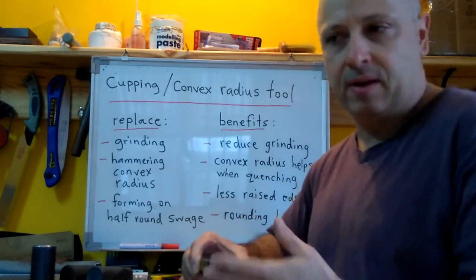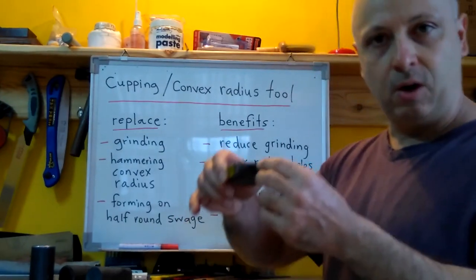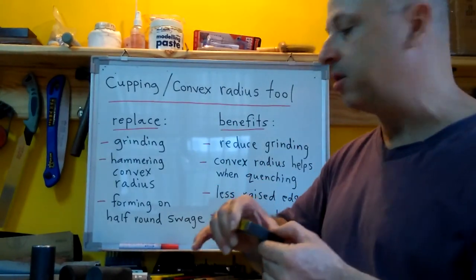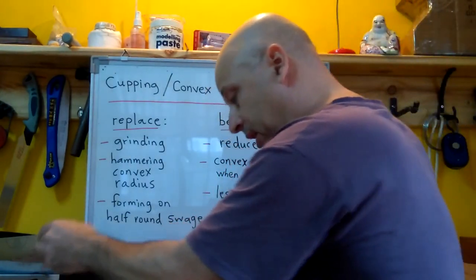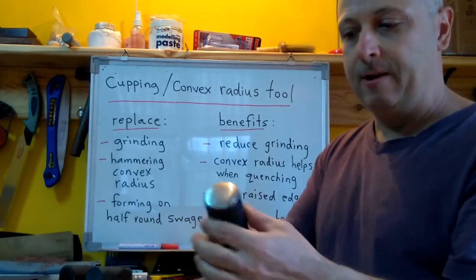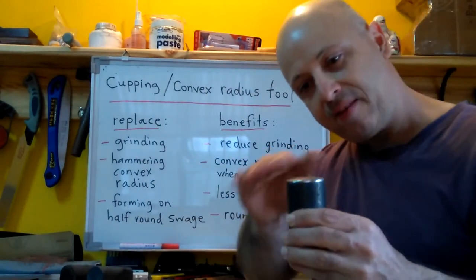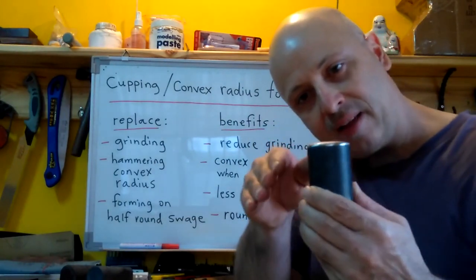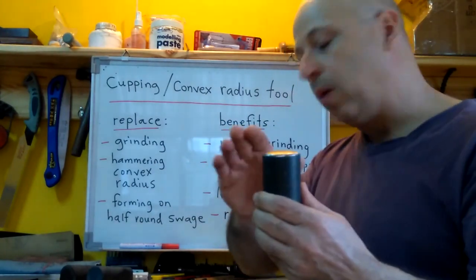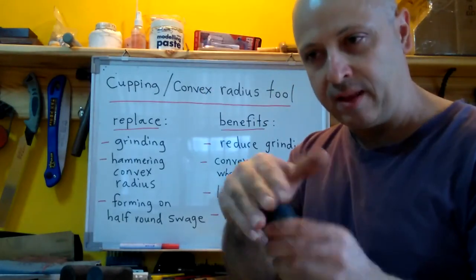Originally like I said I was thinking this should be a hardy tool, but I think what I'm going to do is I'm going to form this and just try it free on the anvil face. And then if it works well I can figure a way to put a shank on this to insert it into the hardy hole.